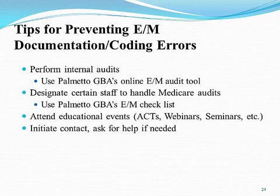Use the Palmetto GBA checklist, also included with the E&M tool. When you go to that first link under the E&M Help Center, you will see a checklist tool. When records are requested, you can go through this checklist and check off as you retrieve the documentation.